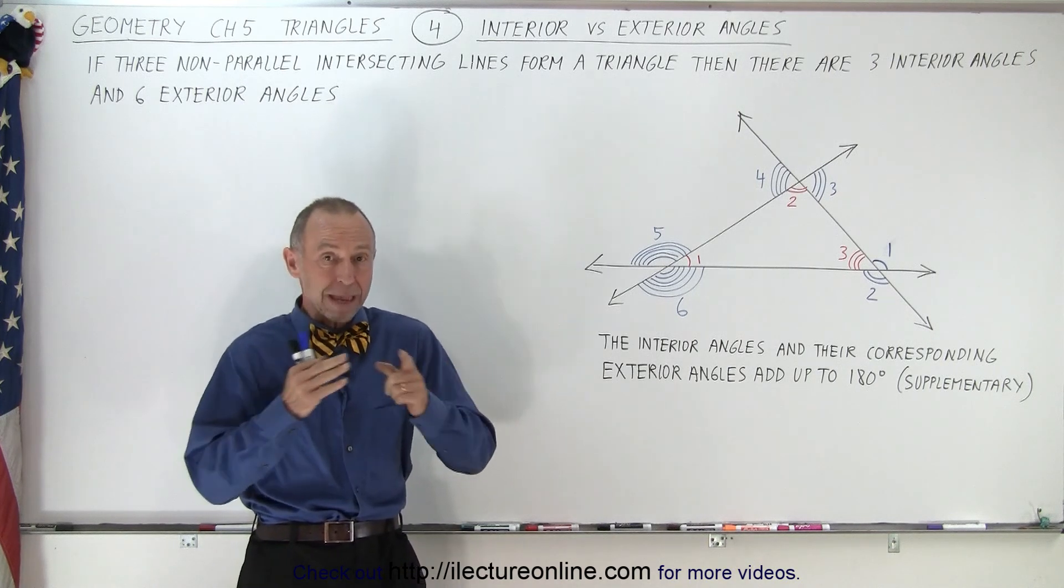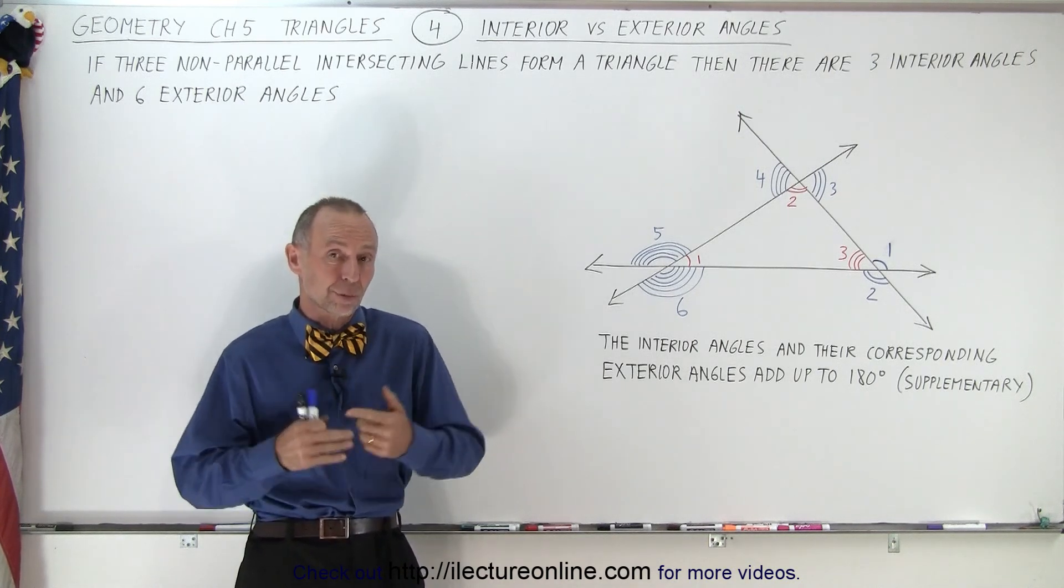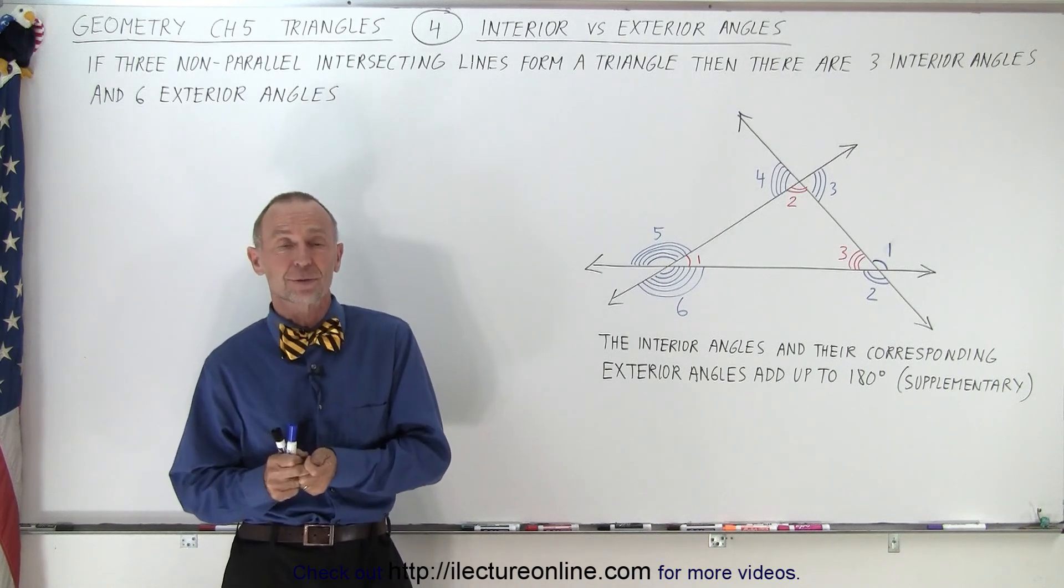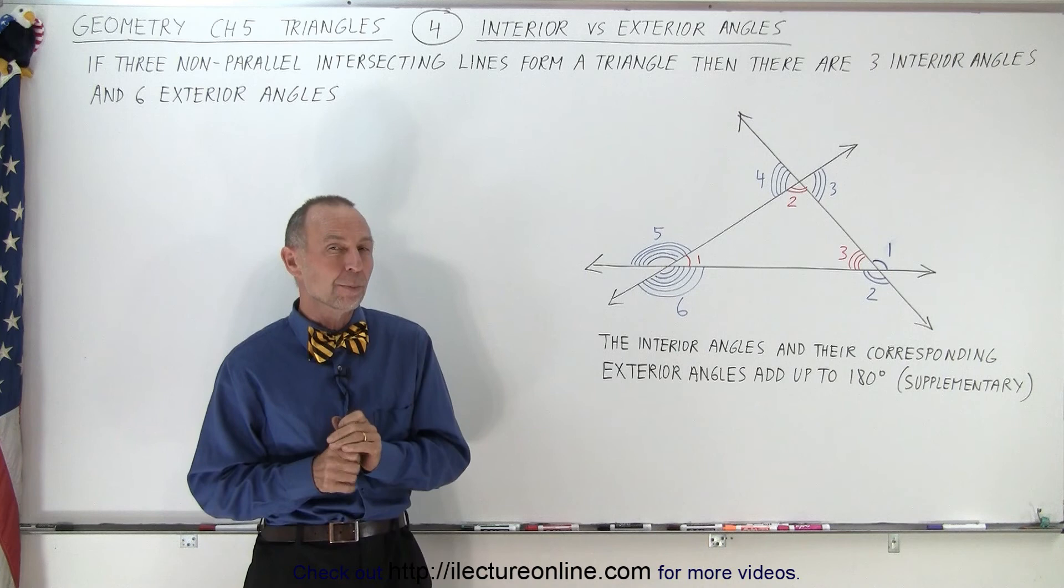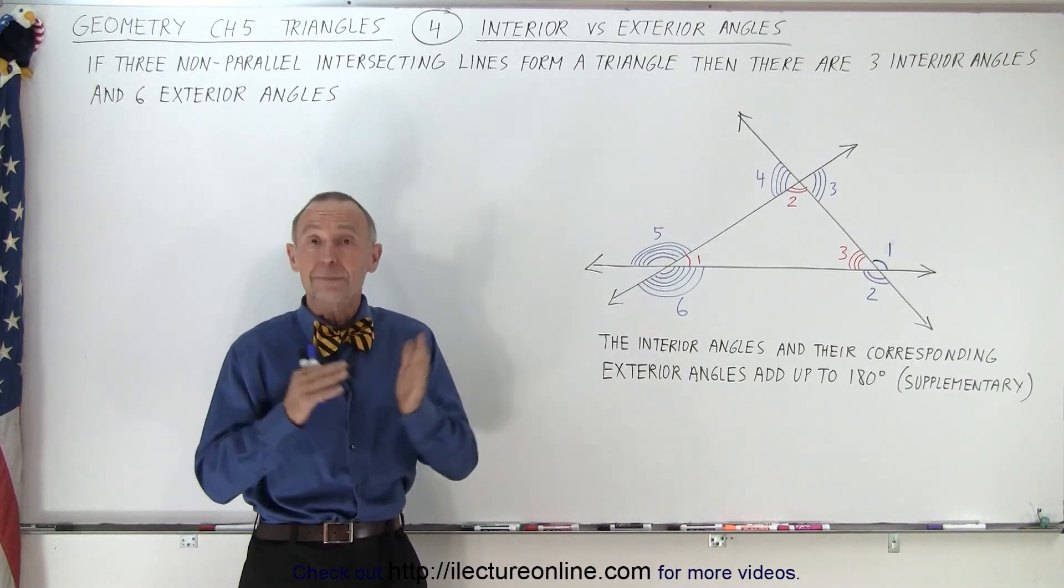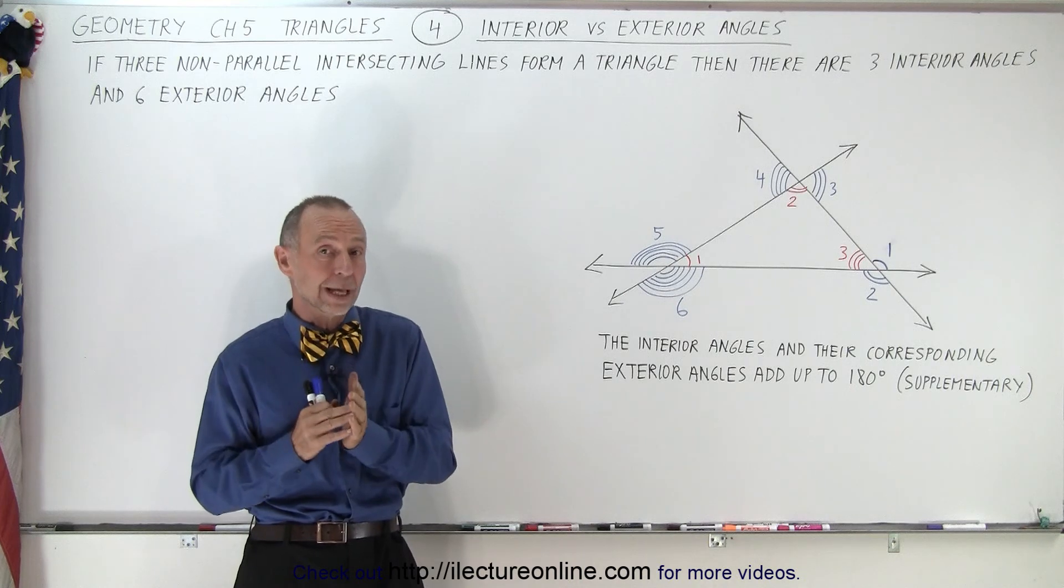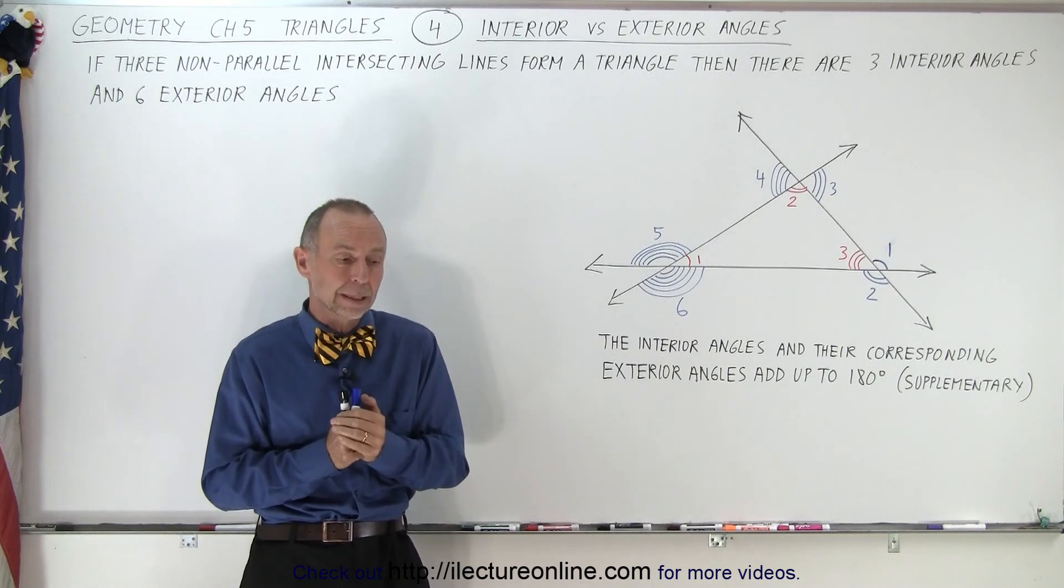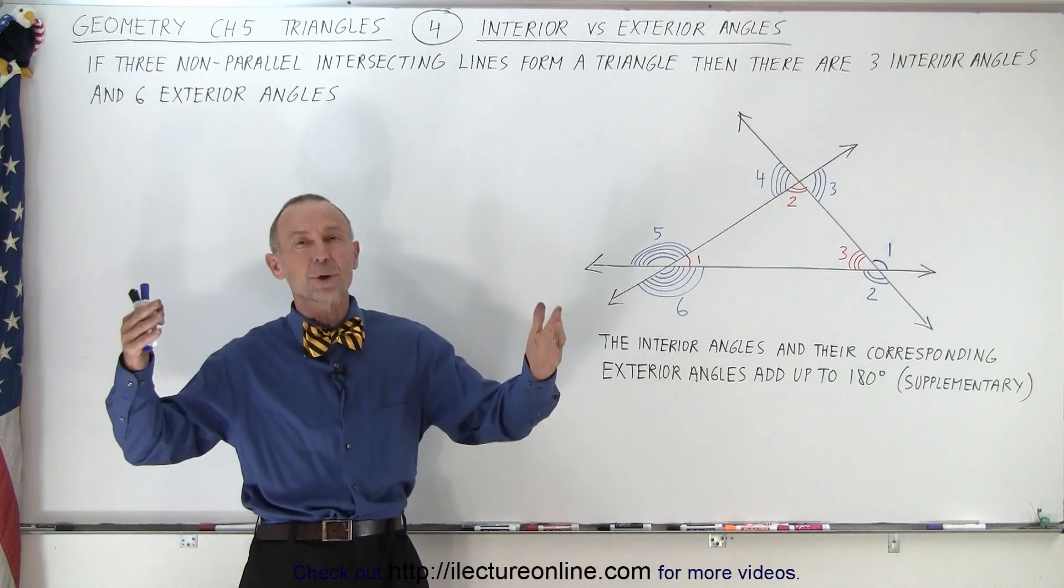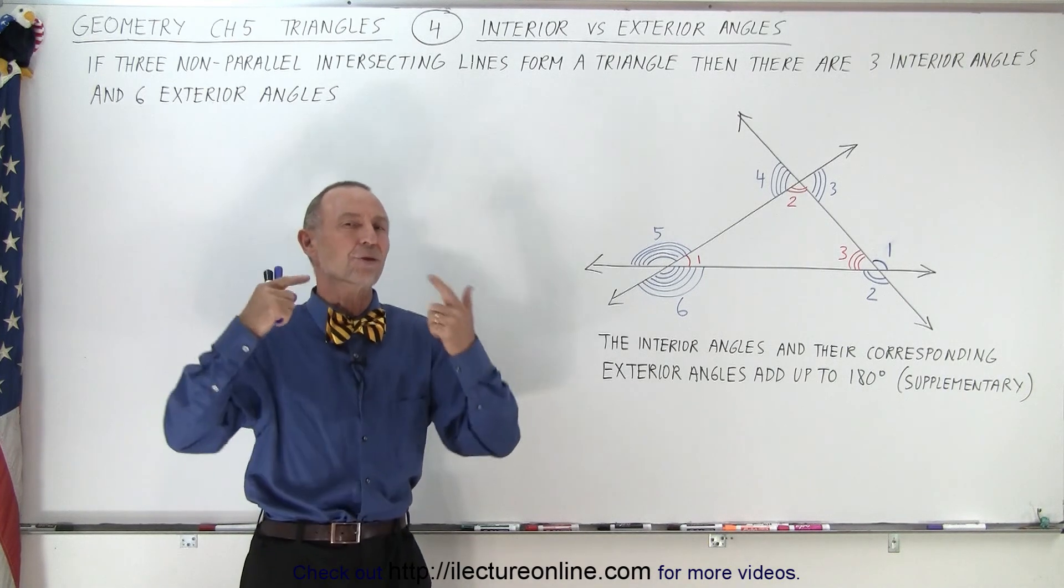Now if we simply make a triangle with three sides, you only have interior angles, so this would not apply. But if you take three lines that extend out, and they're not parallel, none of the three lines are parallel to one another, then you form not only a triangle, but the lines keep going, you will also have external angles.